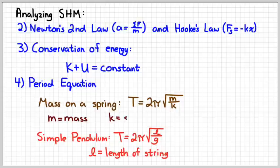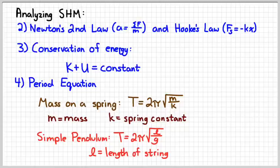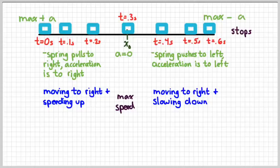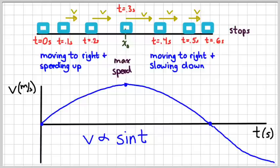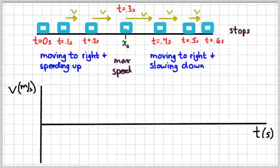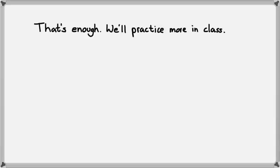And for a mass on a spring, m is the mass, k is the spring constant. So we can use those equations to figure out what the period is. So those are all things that are relatively simple. The challenge for us is going to be understanding graphs such as that one, that one, and that one. And that's where we're going to put most of our effort into practicing in class.